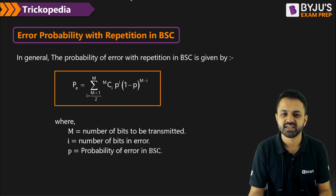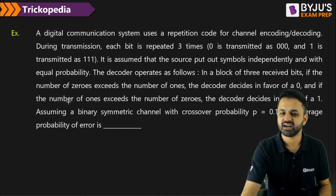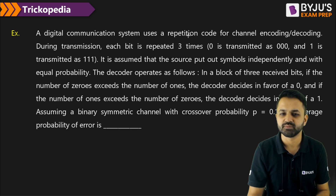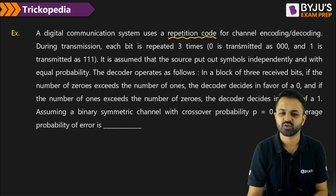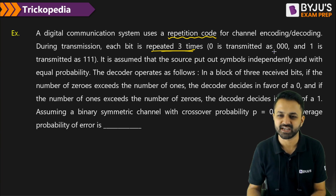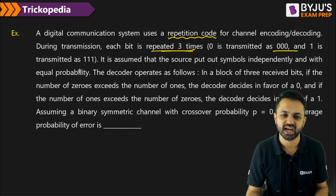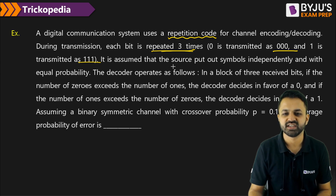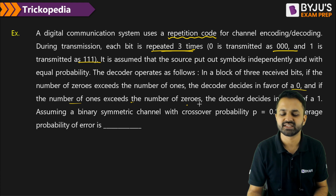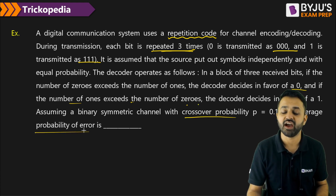Let us apply this to an example that was asked in the Gate exam. A digital communication system uses a repetition code for channel encoding and decoding. During transmission, each bit is repeated 3 times — if I want to transmit 0, I transmit 3 zeros; if I want to transmit 1, I transmit 3 ones. The decision is taken on a block of 3 received bits: if the number of 0s exceeds the number of 1s, we decide in favor of 0; if the number of 1s exceeds the number of 0s, we decide in favor of 1. How do you calculate the average probability of error?